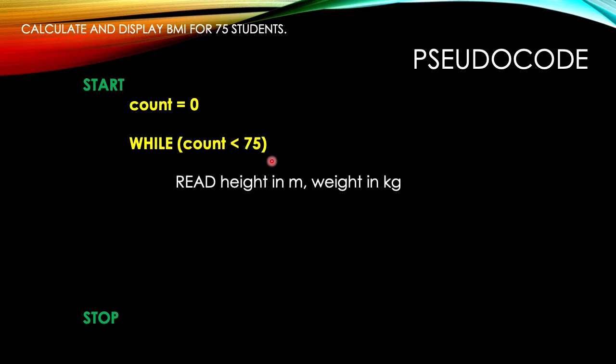We have to read the input. Read our input which is the height in meter and weight in kilogram. Next our process, calculate the BMI: weight in meter divided by height in kilogram times height in kilogram. This is the formula to calculate the BMI.